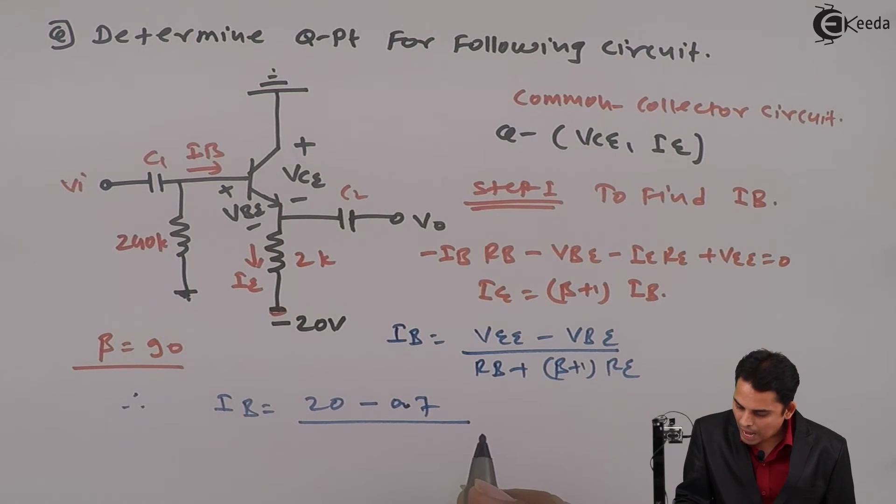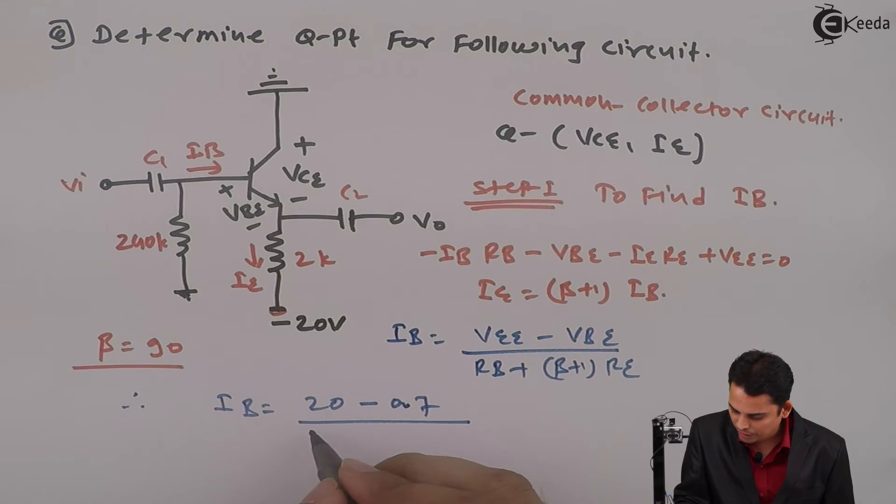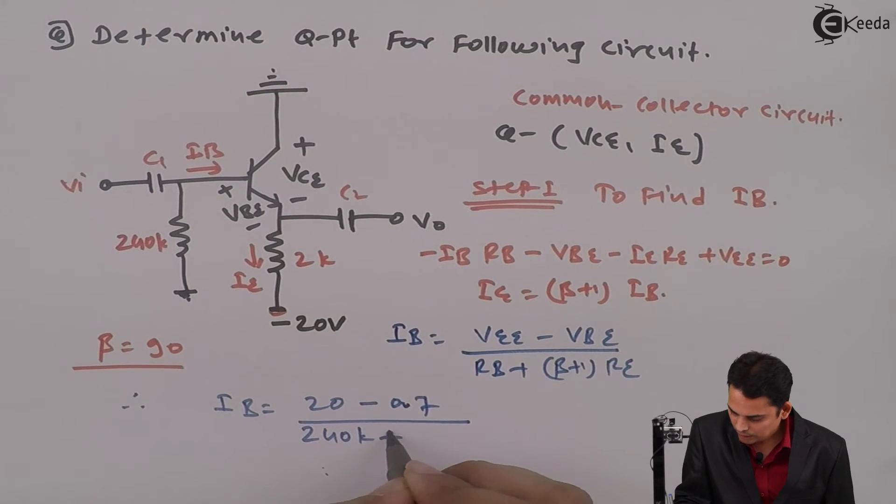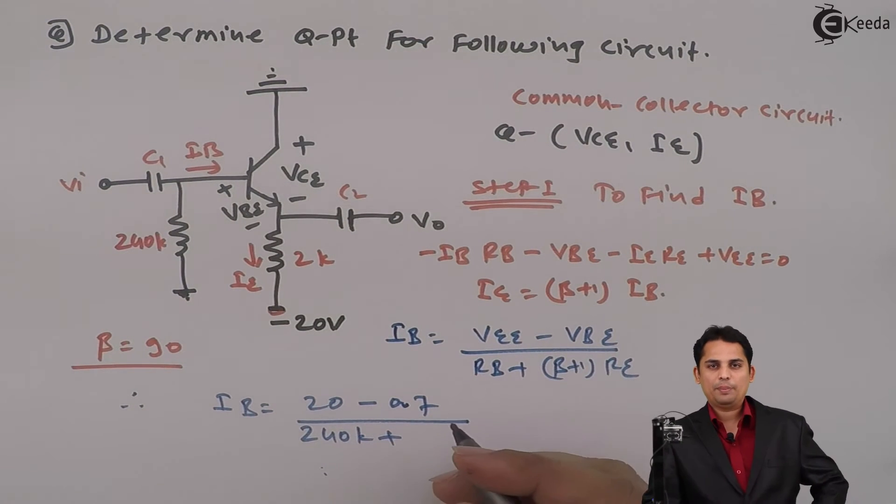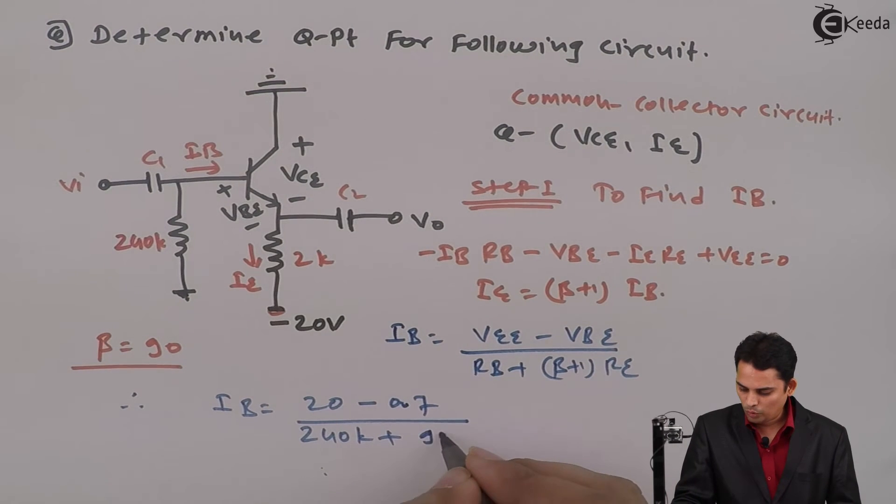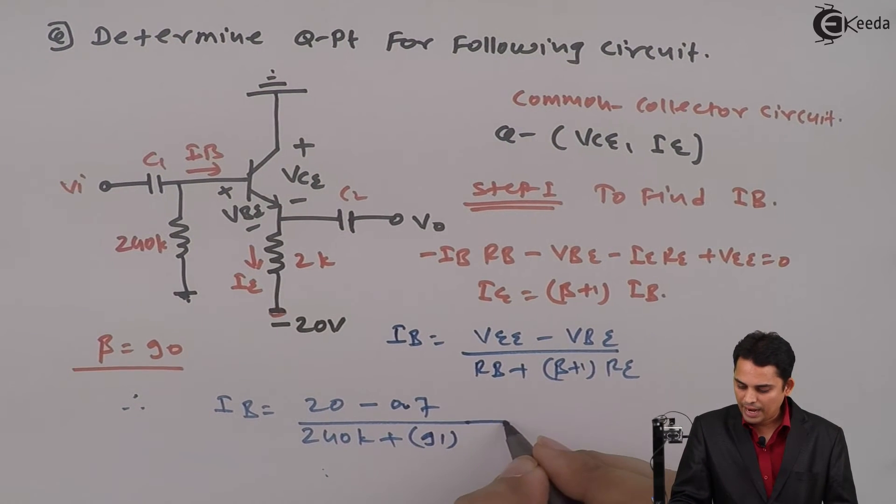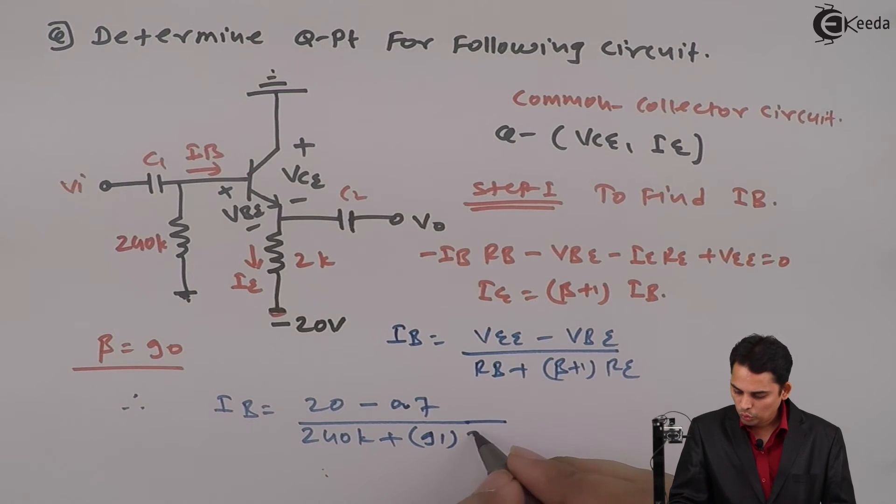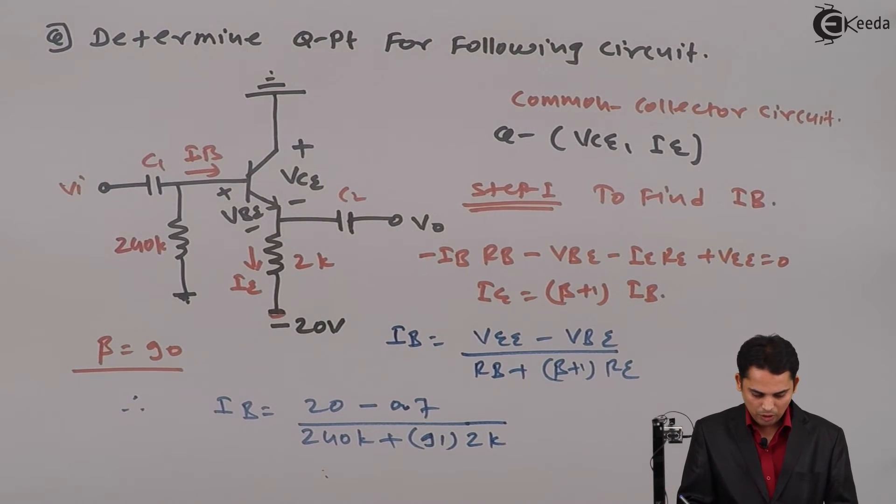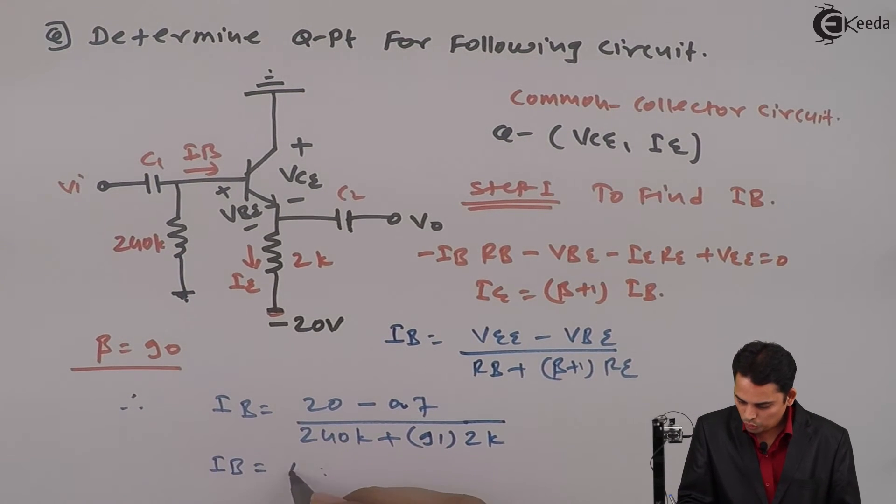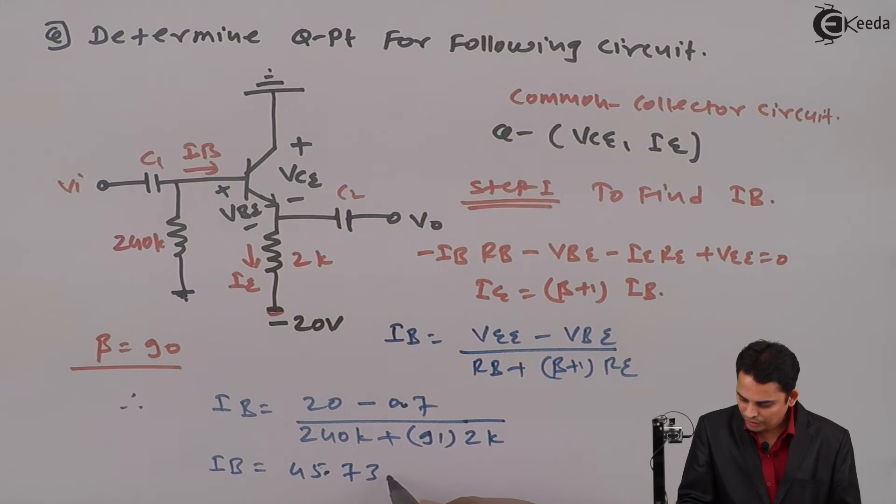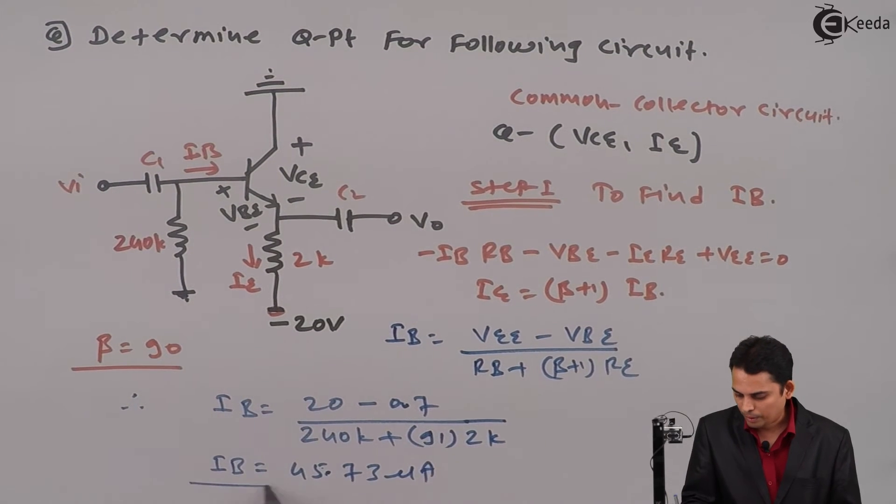And hence IB is equal to VEE minus 0.7 volts divided by RB is equal to 240K plus beta is equal to 90 and hence beta plus 1 equals to 91 multiplied by RE is equal to 2 kilo. So value of base current IB is equal to 45.73 micro amperes.